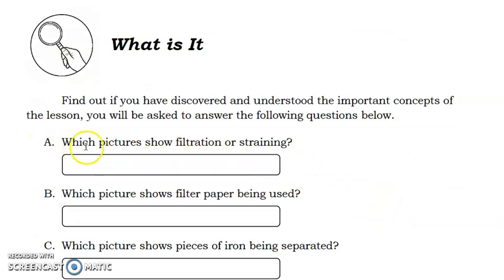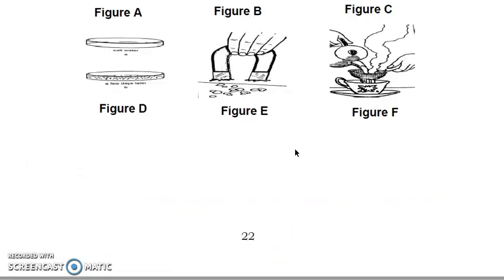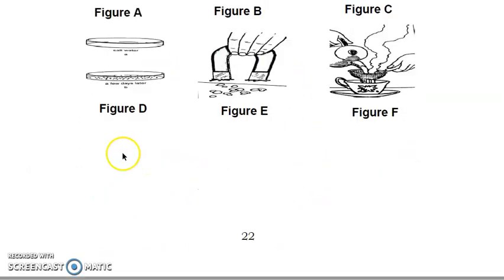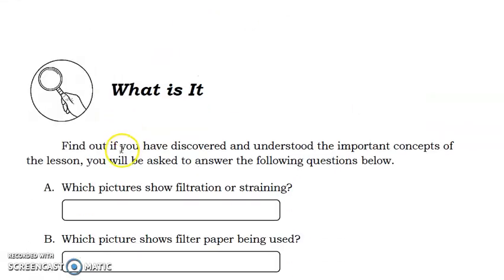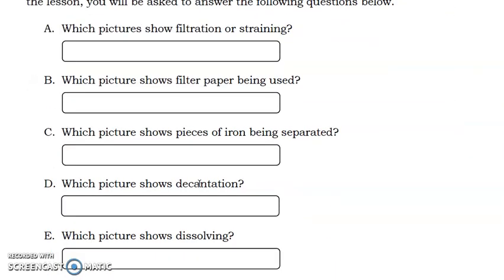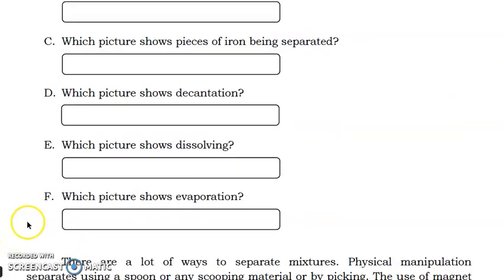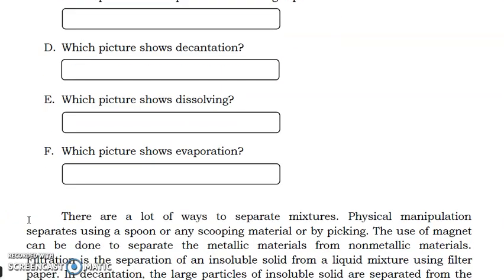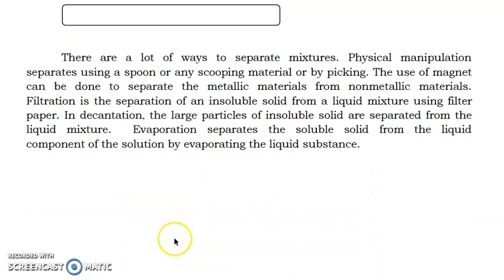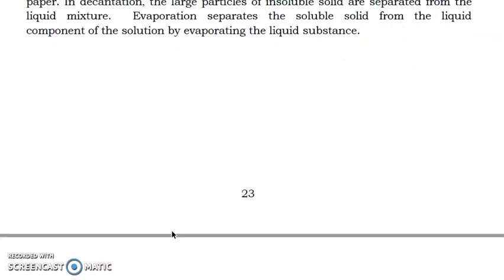So, basahin lang po nang mabuti yung question. Let's say, for example, letter A. Which pictures show filtration or straining? So, alin sa mga pictures na ito yung nagpapakita na yung nag-filter or nag-strain? So, you will just write down, let's say, figure A. Ganon. Okay. So, A to F. Para po sa third activity under what is it? And then, read this paragraph. So, description siya ng mga separating techniques. And then, proceed with the fourth activity.